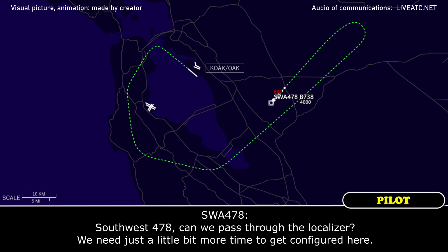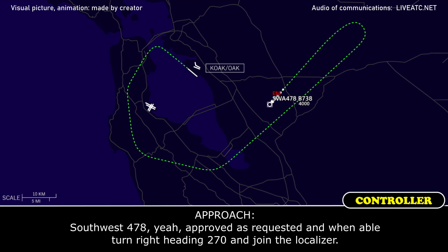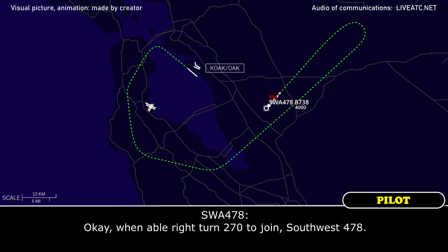Southbound 478: Can we pass through the localizer? We need just a little bit more time to get configured. ATC: Southbound 478, yeah, approved as requested. And when able, turn right heading 270 and join the localizer. Southbound 478: When able, right turn 270 to join, southbound 478.